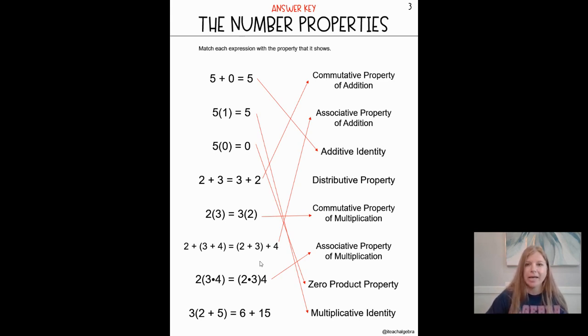And the last one. Three times the quantity of two plus five becomes six plus 15. Now we know the distributive property. That's the last option that's there. It's when you take the value that's outside of the parentheses, that's touching the parentheses, and you distribute it by multiplication to everything in the parentheses. So three gets multiplied by two. Three times two is six. And then three would also get multiplied to five. Three times five is 15. Now the values on either side of this equation are the same. Two plus five is seven. And three times seven is 21. Whereas over on the right, six plus 15 is also 21.